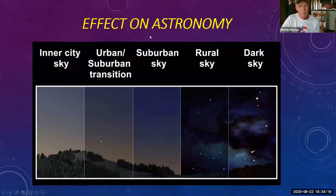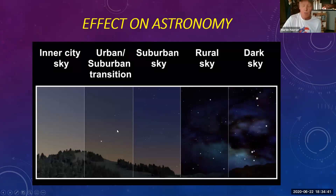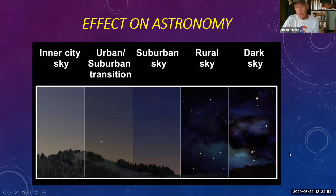We can also look at the effect on astronomy. This graphic ranges from an inner city sky on the left to dark skies on the right. As a child growing up in New Jersey, I had a very nice view of the night sky and could see most stars easily. But by the time I left New Jersey in 2002, I could only see a handful of the brightest stars, except Sunday nights when commercial lighting was turned off. We're trying to prevent the left-hand panel from happening and preserve what we still have on the right.